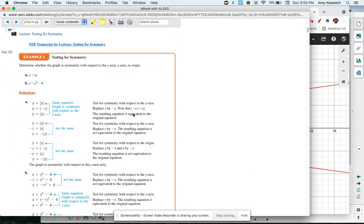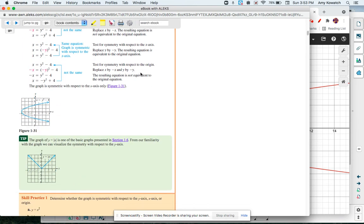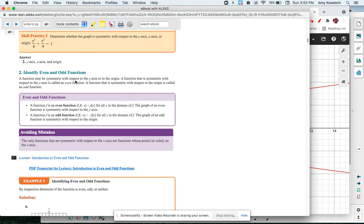The algebraic way to do symmetry is not required in the online multiple choice environment, but be aware that there is some algebra that you could do to prove symmetry. And the most important thing from this section is odd, even then in 1.8, you get into compositions. So good luck.